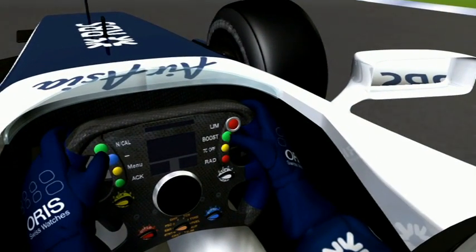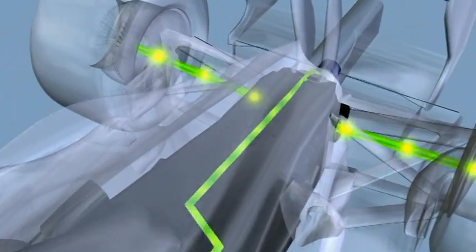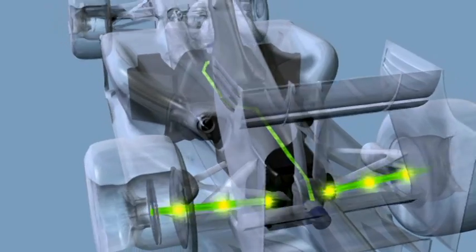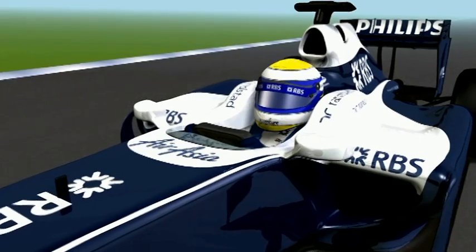Then under acceleration, the flywheel has energy taken from it by its electric motor and that's passed to the electric motor on the gearbox to assist in acceleration.